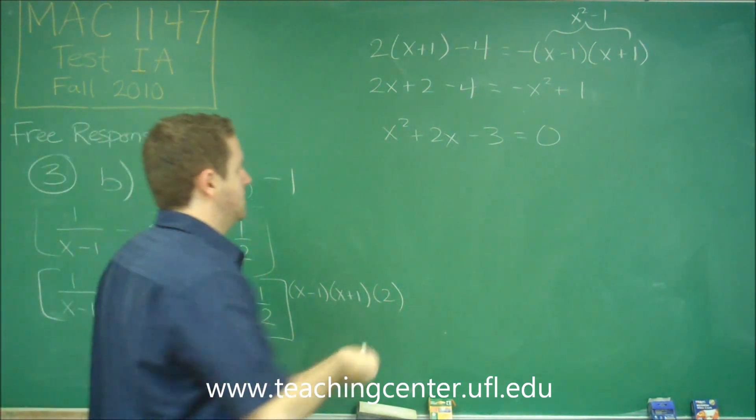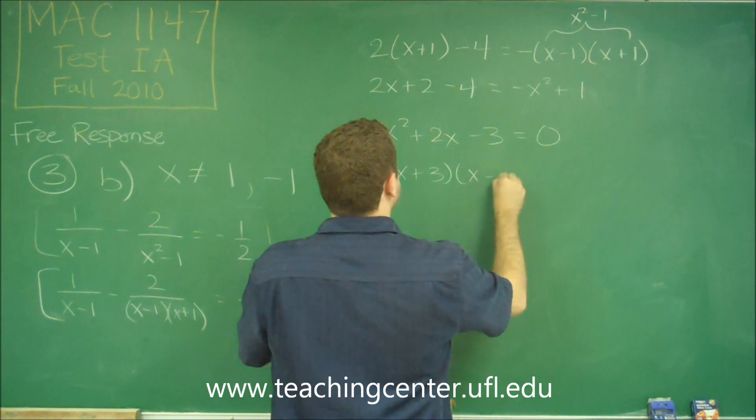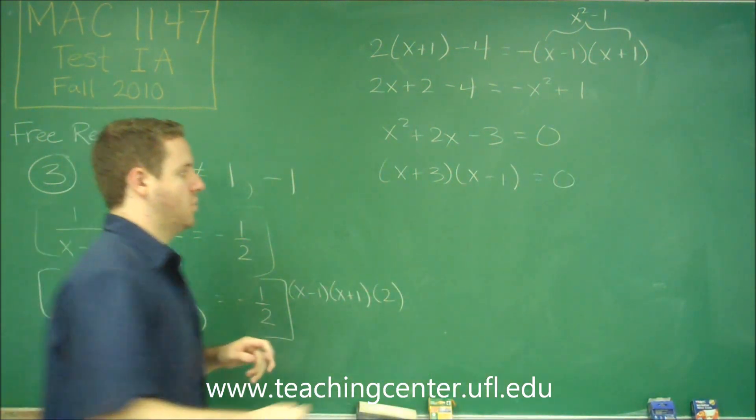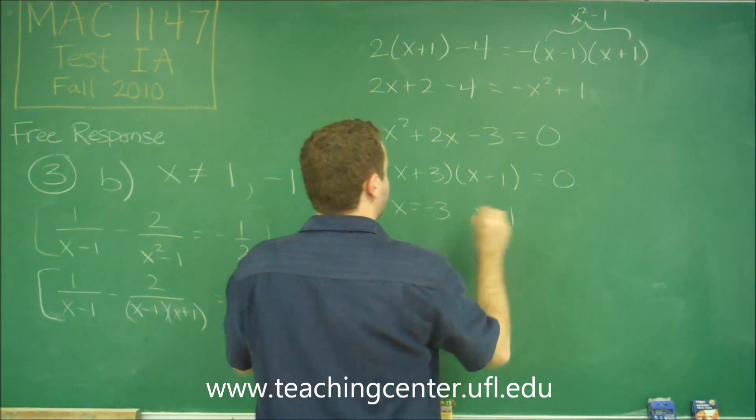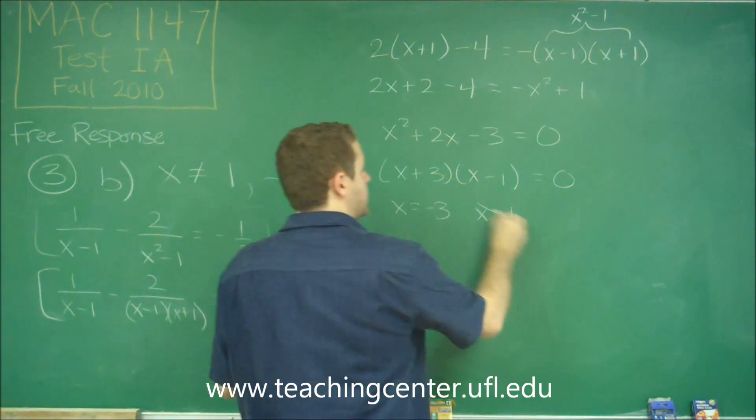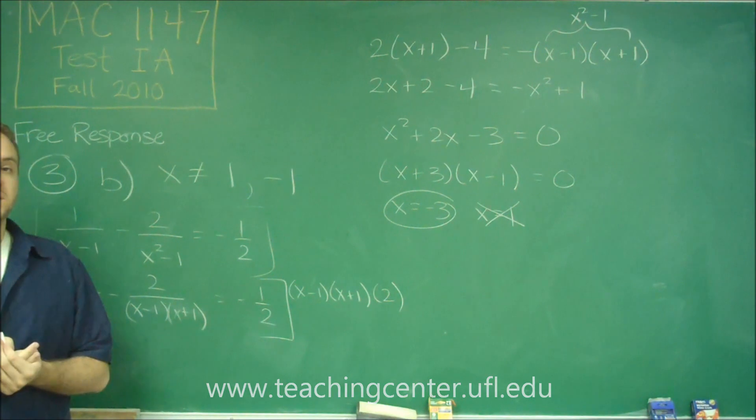So now we can factor this. This is going to be x plus 3, x minus 1, which of course gives you then that x equals negative 3, and x equals 1. Well, we just said before that x can't be 1. So this is our extraneous solution, and x equals negative 3 is our only correct solution.